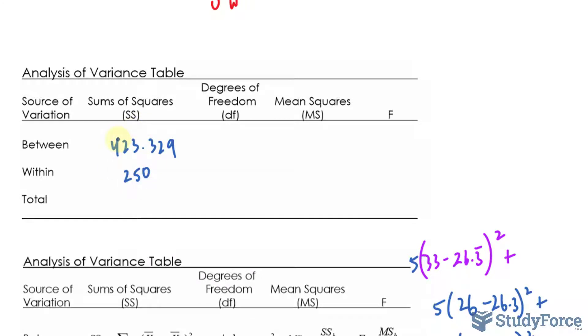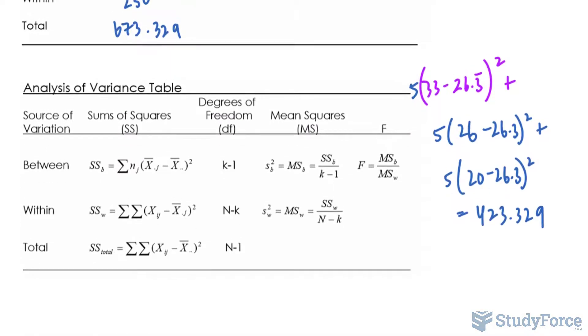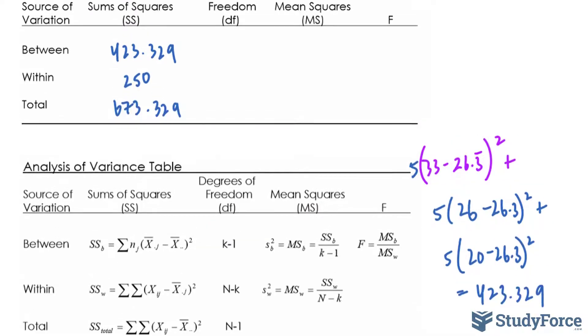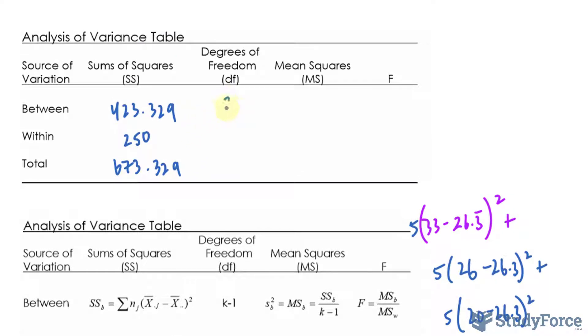Now we add these two values up, where you should get 673.329. We finished the first column in our ANOVA table. Now we do the degrees of freedom. Let's take a look at the formulas again. We have K minus 1. K represents the amount of groups. We have three groups. So 3 minus 1 is 2.